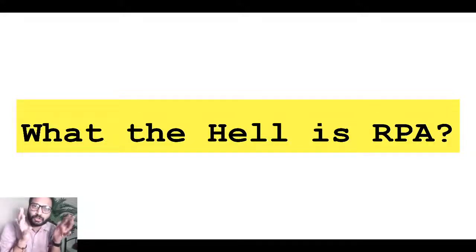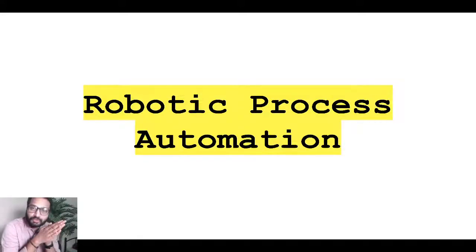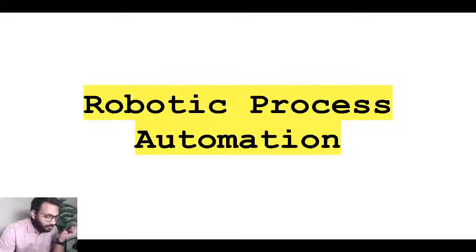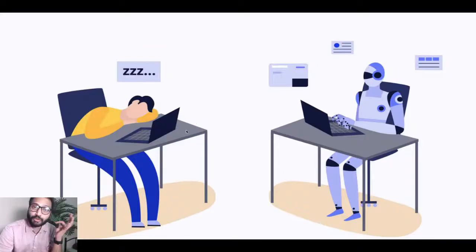Robotic process automation is a tool which has been widely used in the technology industry. Let's go ahead and see a classic example of how robotic process automation actually works.